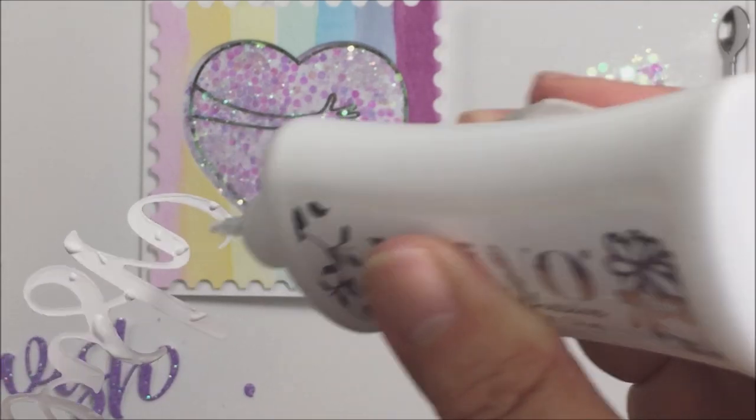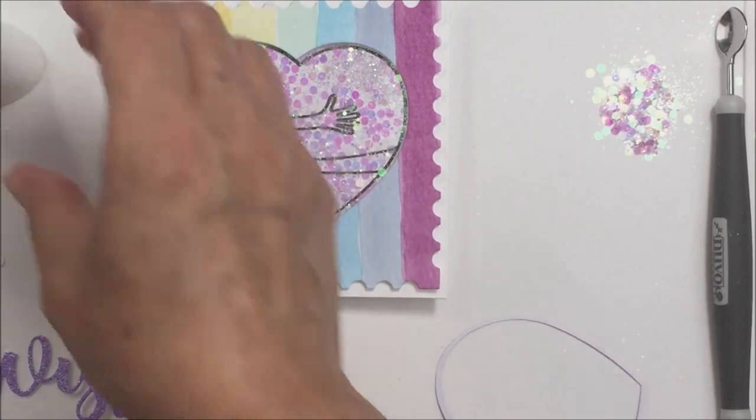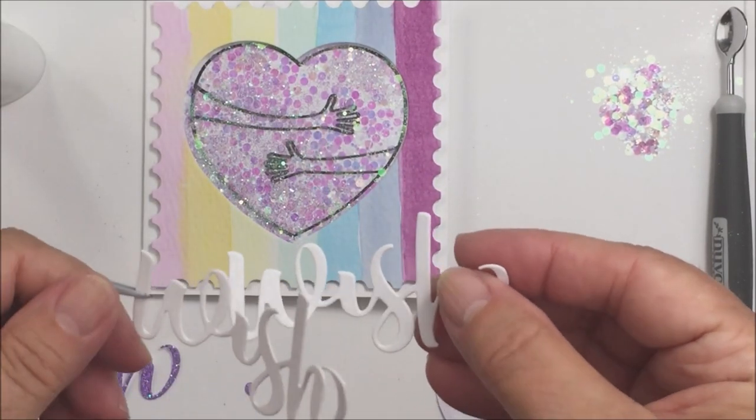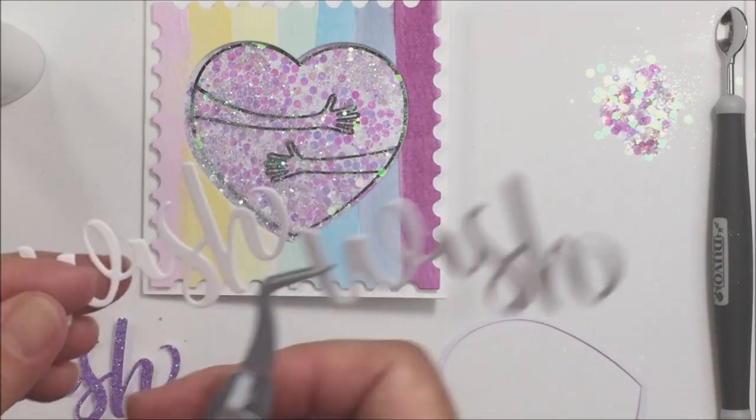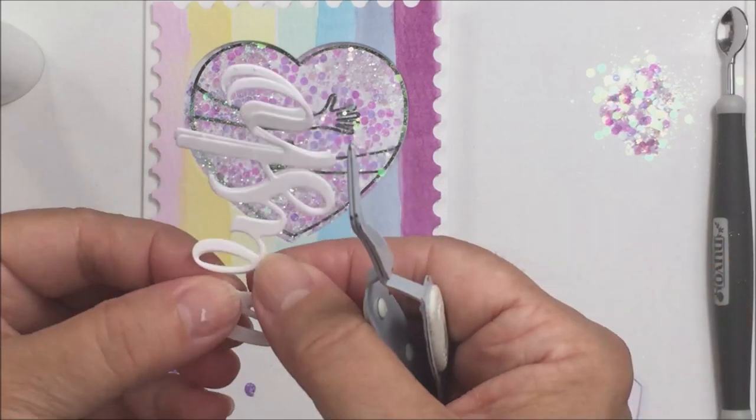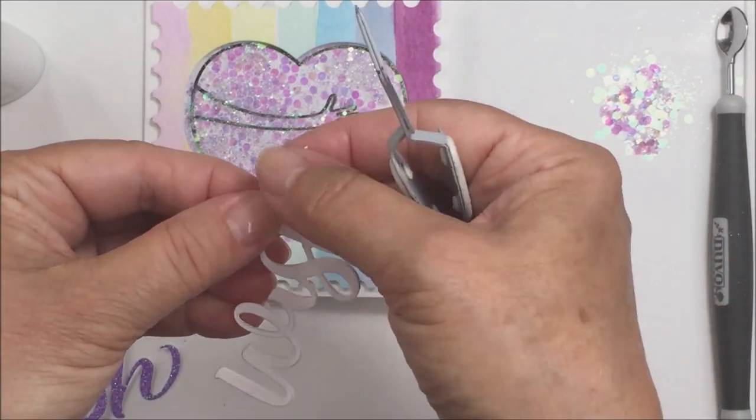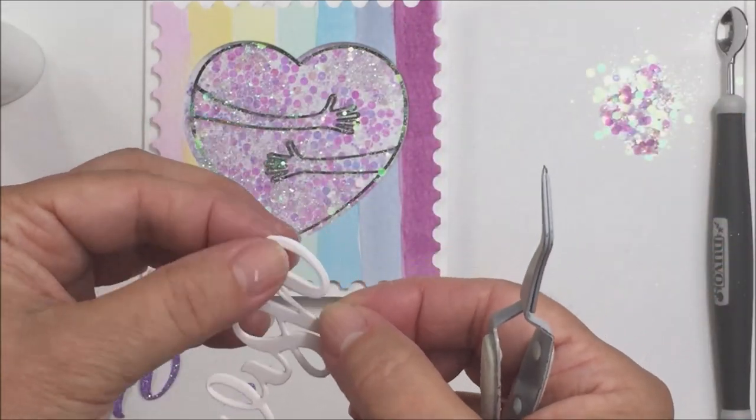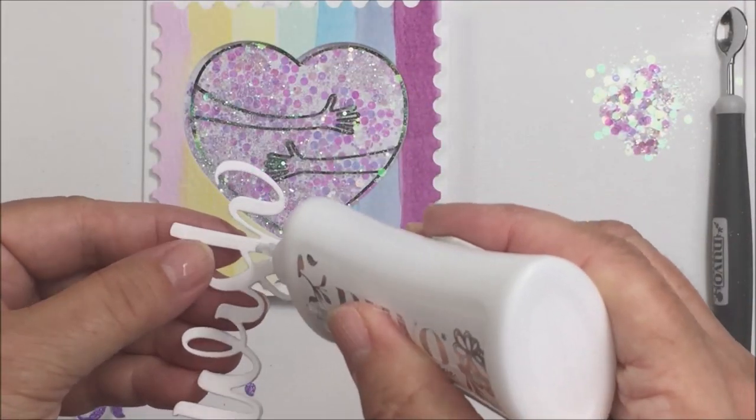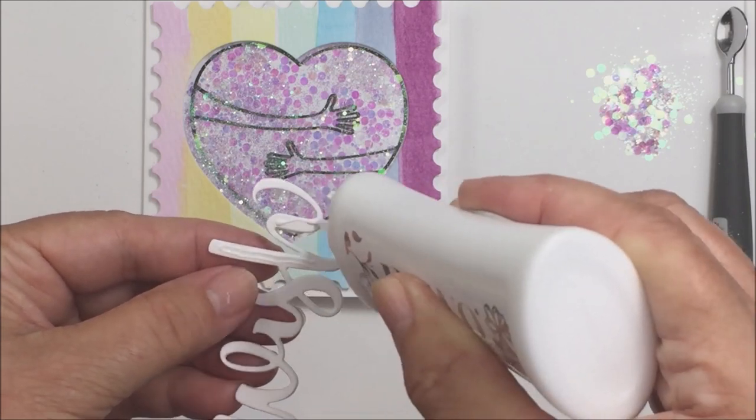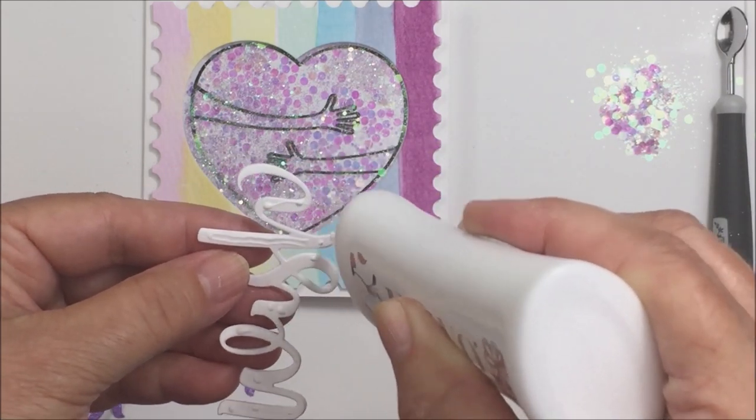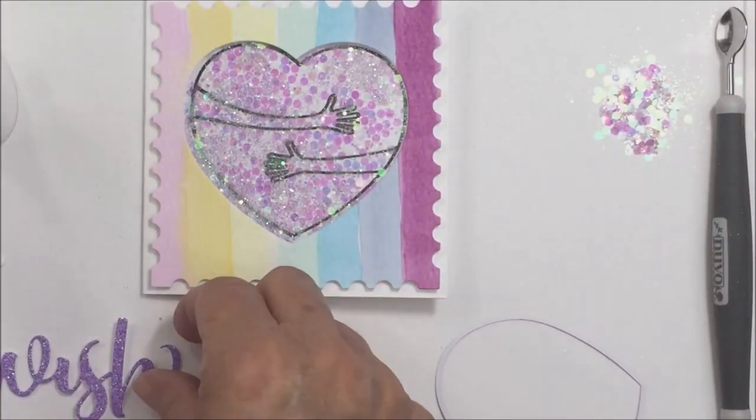Now I'm just taking my Nouveau adhesive and I have cut out the Wish sentiment from the Wish Honey Cuts. I've cut it three times, twice from some of the Neenah 110 pound heavy cardstock, and I'm going to glue those together with my Nouveau adhesive. And then I'm going to adhere on top of that that really beautiful glitter paper that I used for my little heart frame, the purple glitter paper. I'm going to use on top of this Wish sentiment and that's just going to finish the sentiment off in a lovely way.